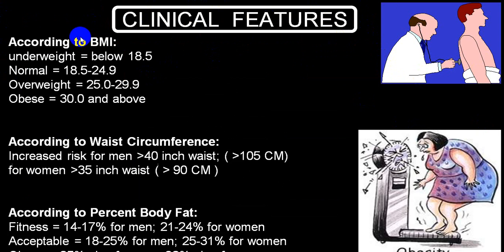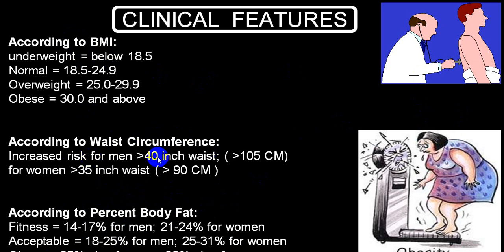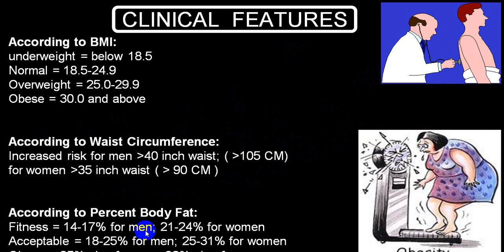Obesity can be identified by BMI, waist circumference, or percentage of body fat. For waist circumference: in other countries, more than 105 cm in males and more than 90 cm in females is obese; in India, these values are reduced to 90 cm in males and 85 cm in females. For body fat percentage: more than 25% in males and more than 32% in females is considered obese.